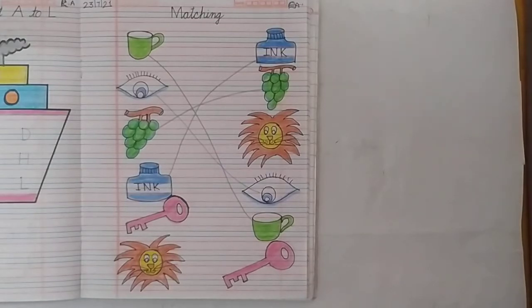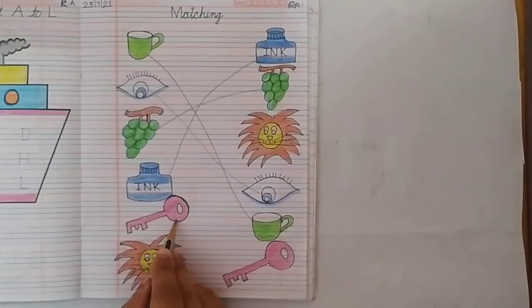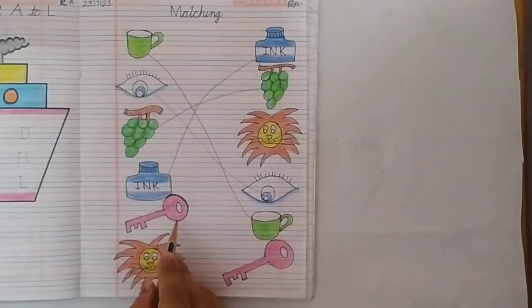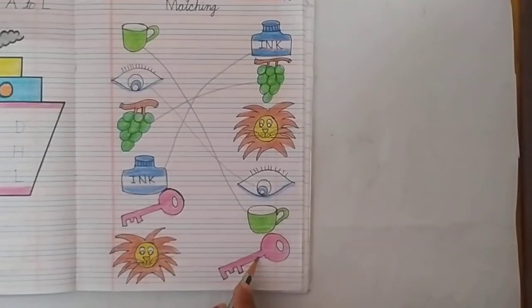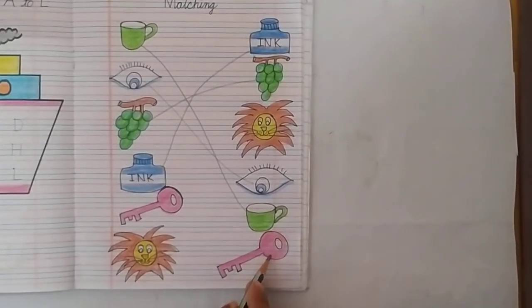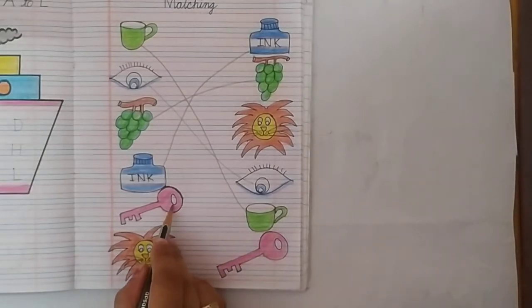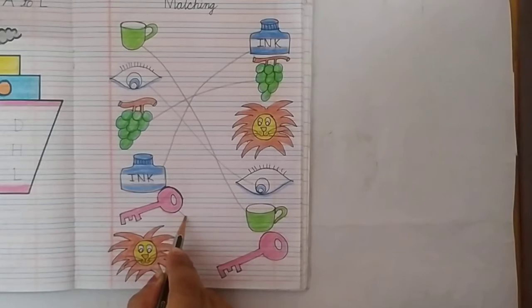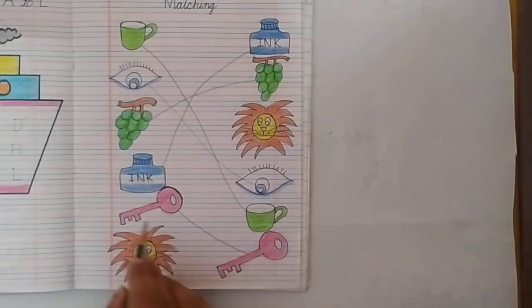Aap bokhat jali se aap is ko koro ge. This is the picture of key. K for key. And here is the another key. Yes. Here is another key. So we match key with another key. Yes. Same, same key.